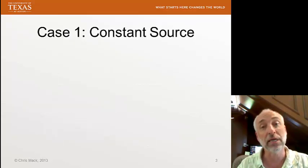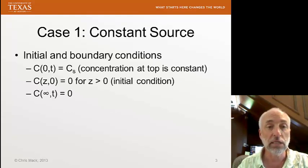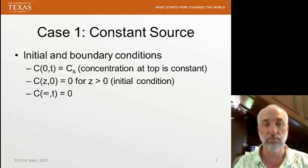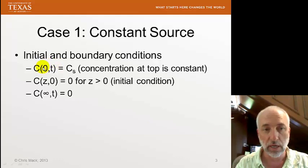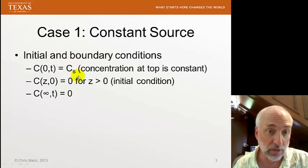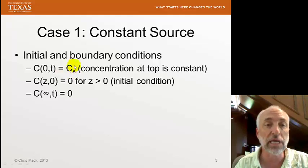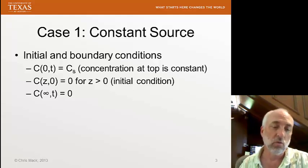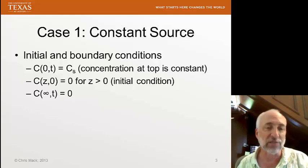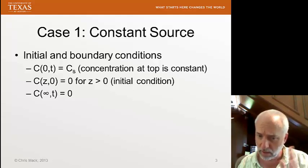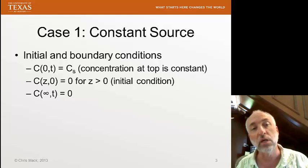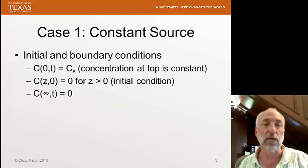Our first case is called the constant source diffusion case. The most important boundary condition is at the top — the concentration at the top at all times is a constant. That's why we call it the constant source. This is equivalent to the old-style diffusion where we deposit dopant on the top of the wafer in a concentration in excess of the solid solubility limit, so the concentration at the top of the wafer is always at the solid solubility limit. There's a sufficient supply of dopant that we never run out.